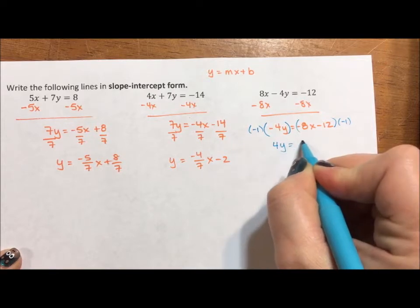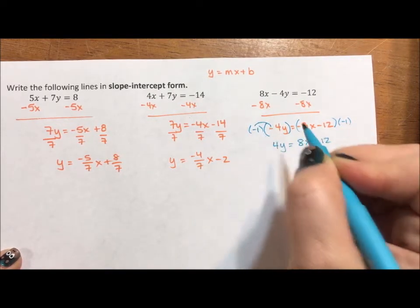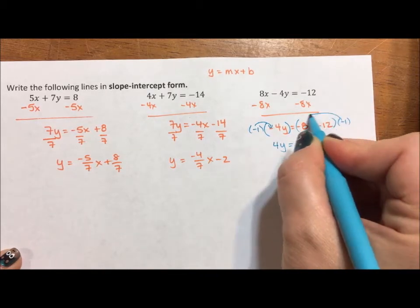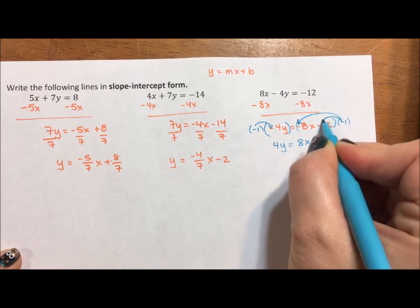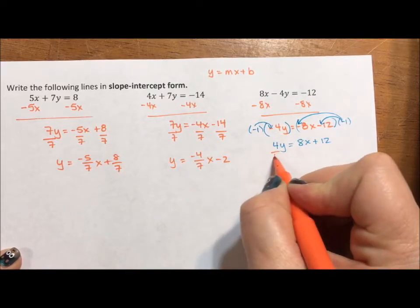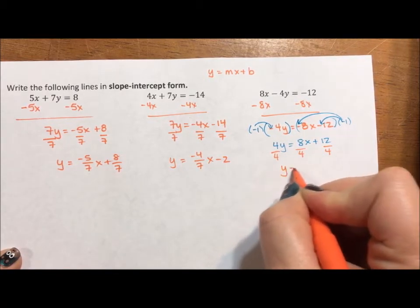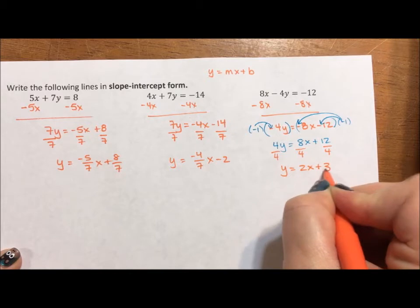I get 4y equals 8x plus 12. Negative times a negative is positive. It's just an extra bit of caution to make sure that everything we do is perfect. Y equals 2x plus 3.